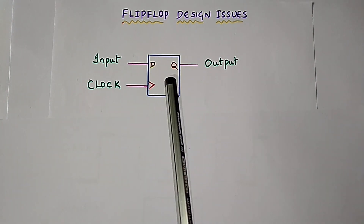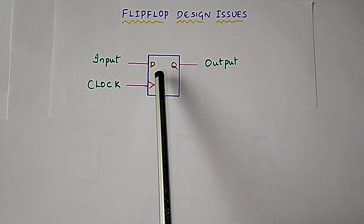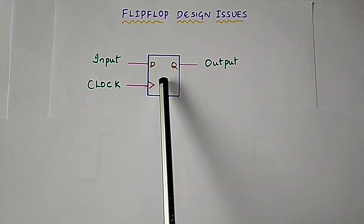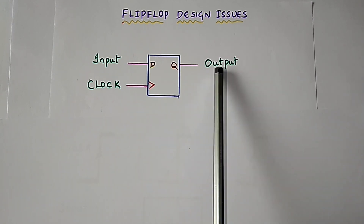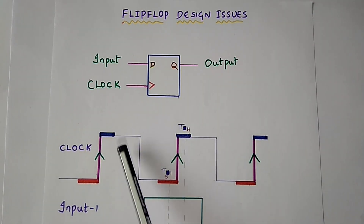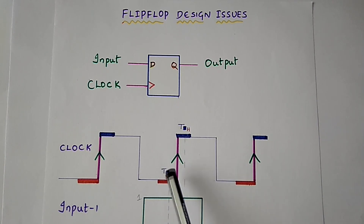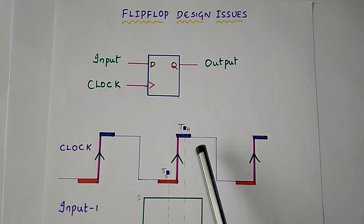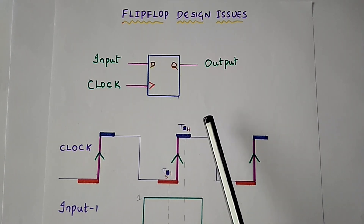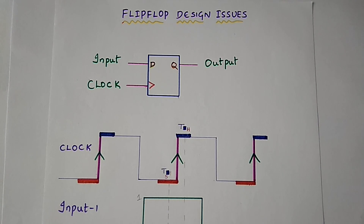From this analysis, it is clear that if there is a setup time violation, hold time violation, or both, the flip-flop stores incorrect data and its output is unpredictable. One needs to take care of these design issues while designing sequential circuits.